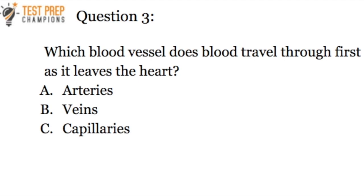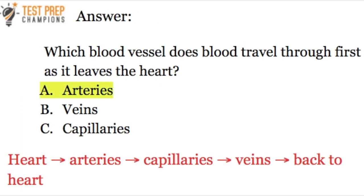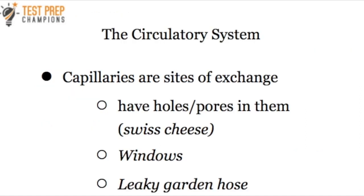Quiz time, question three: which blood vessel does blood travel through first as it leaves the heart? The answer is A — arteries. Just remember, blood goes from the heart to the arteries, to the capillaries, to the veins, and back to the heart.